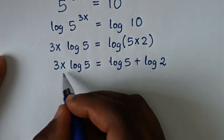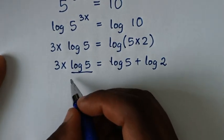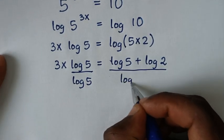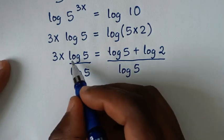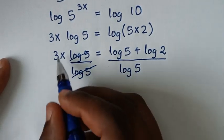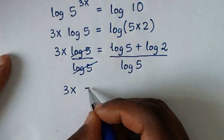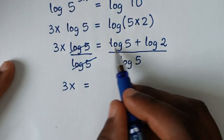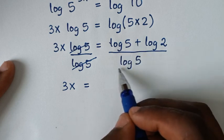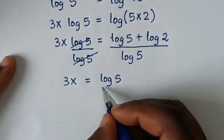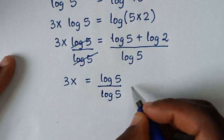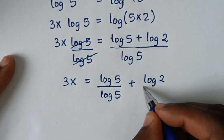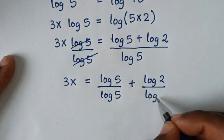From here we'll divide by log of 5 on both sides, so here it will be over log of 5 and here over log of 5. This log of 5 will cancel with this log of 5, then it will be 3x is equal to log of 5 over log of 5 plus log of 2 over log of 5.